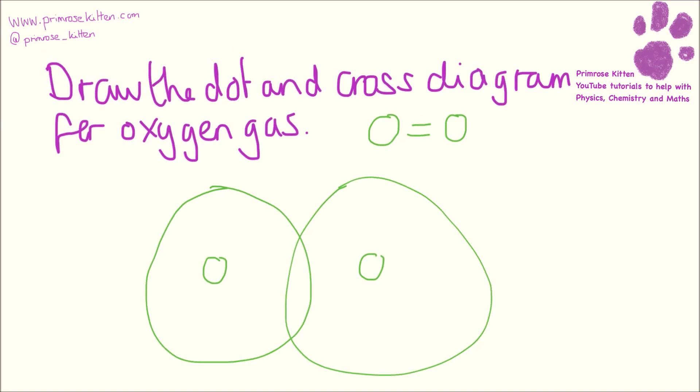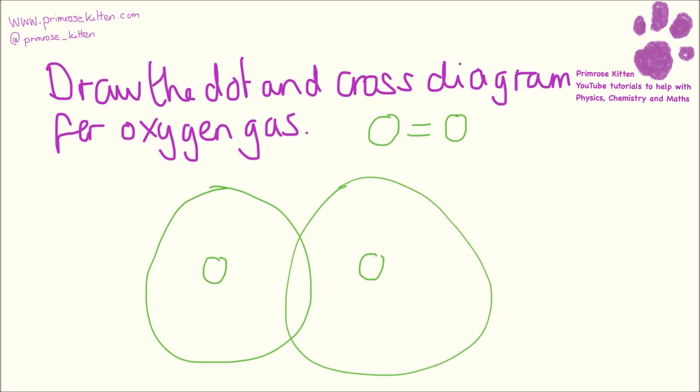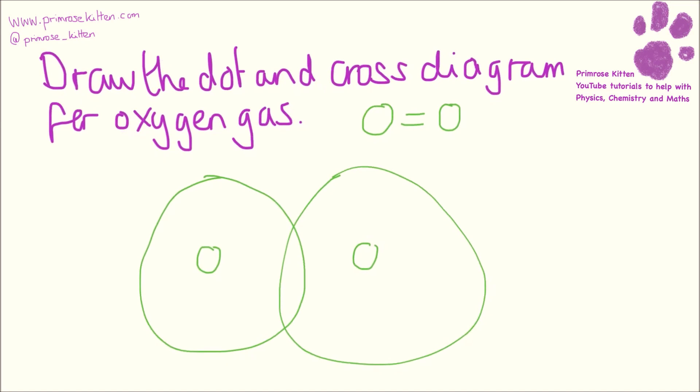One coming from one and one coming from the other, so we have dot, cross, dot, cross — there's our double bond. One oxygen donating two electrons, the other oxygen donating two electrons.